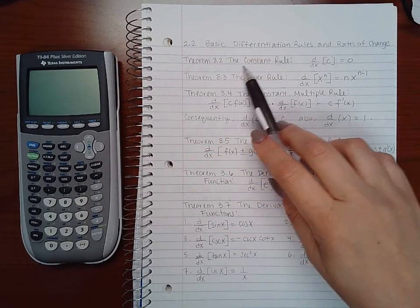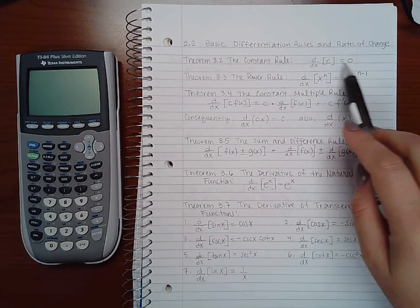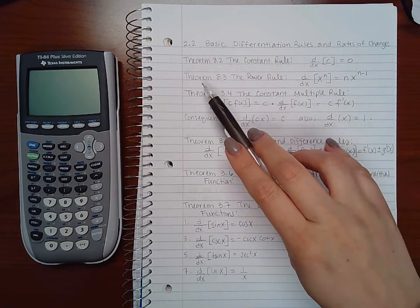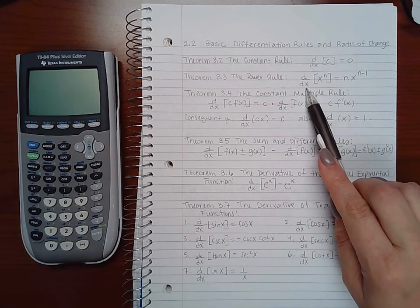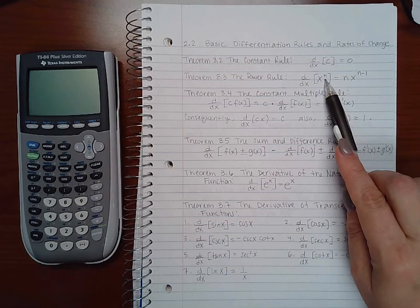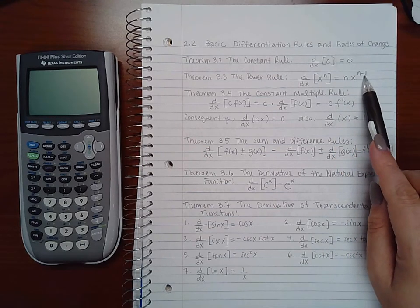So theorem 3.2 is the constant rule. It states that the derivative of any constant is 0. And theorem 3.3 is the power rule, and it states that the derivative of x to any power is going to be that power times x to the power decreased by 1.